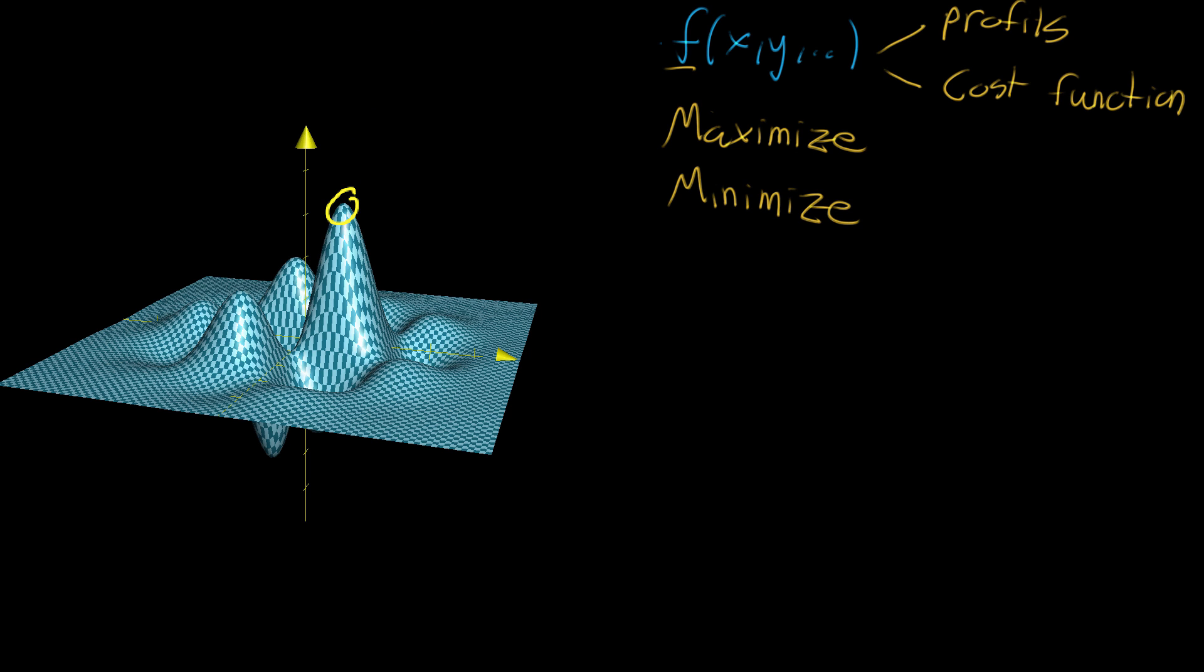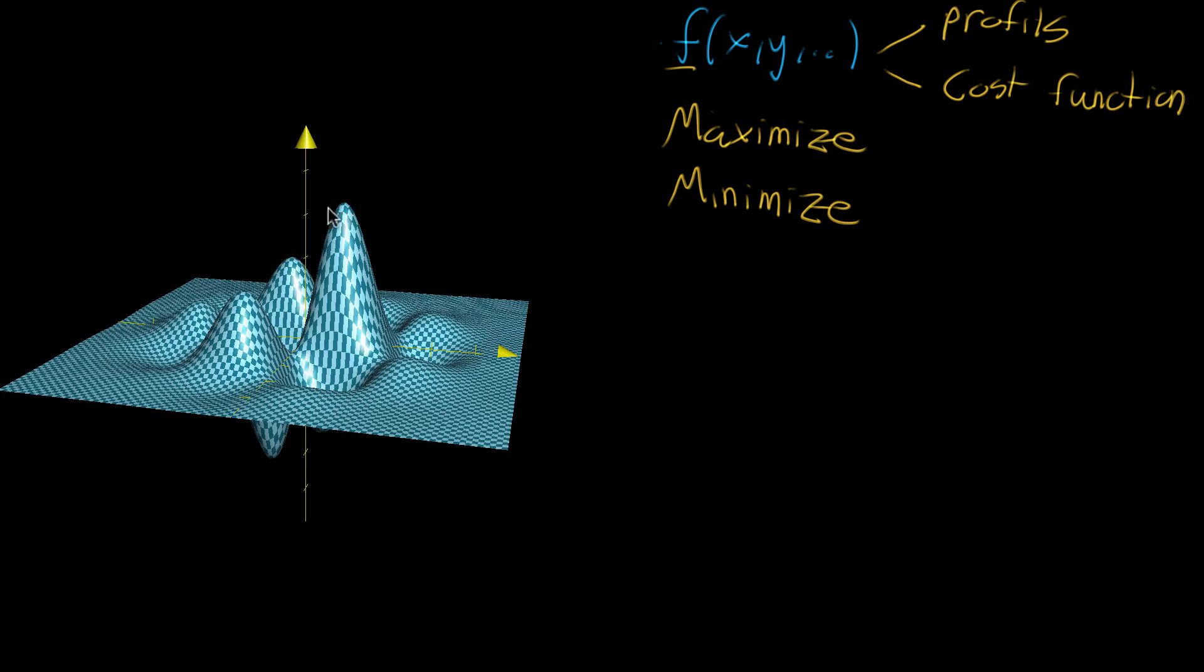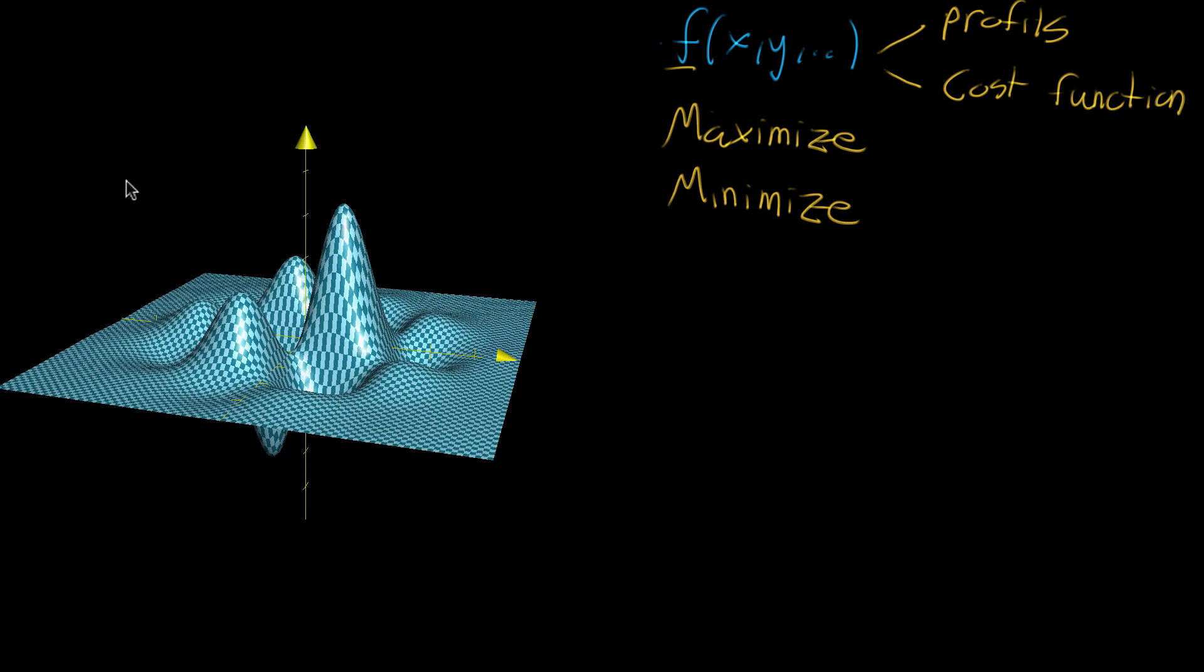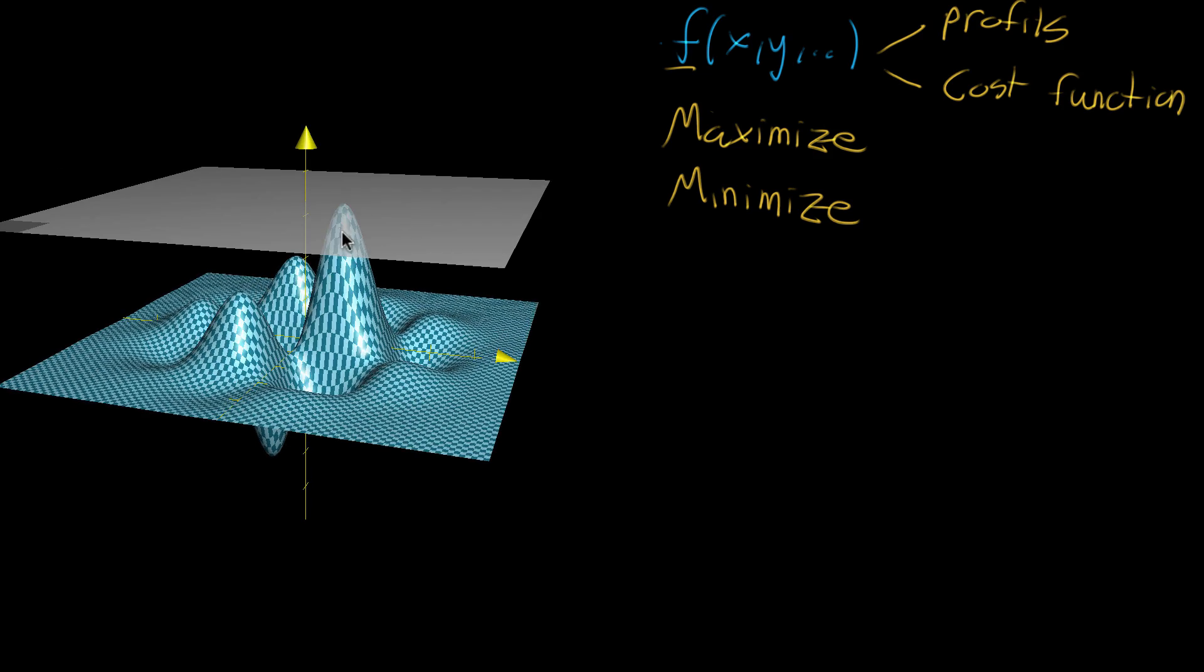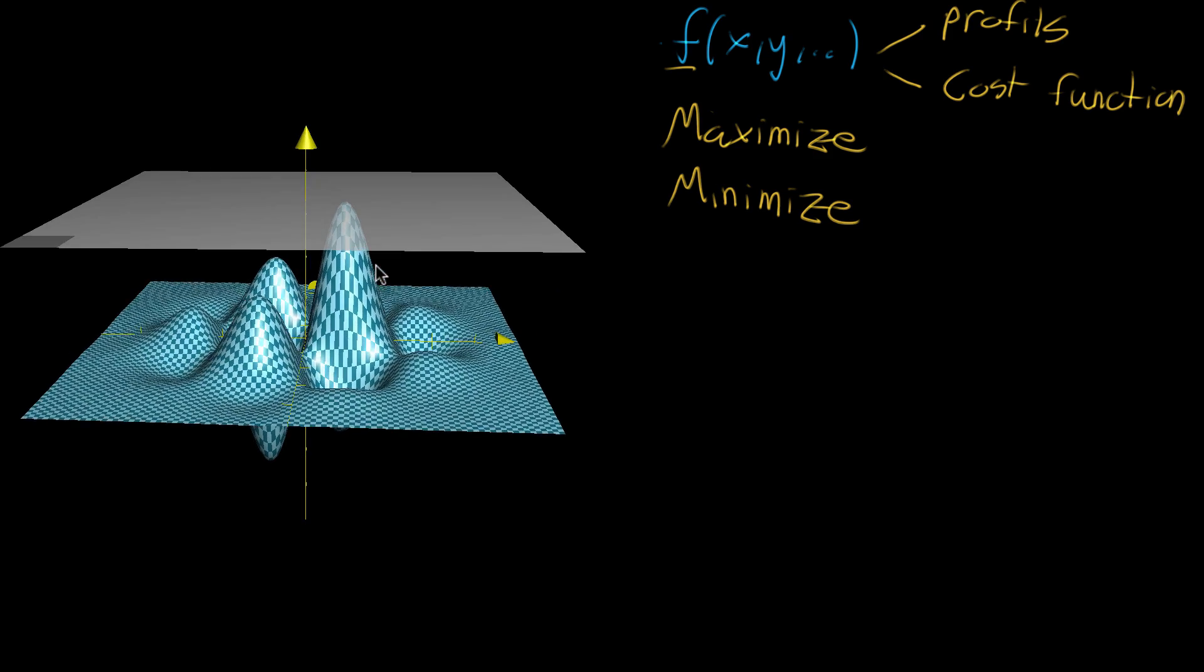This is perhaps the core observation in calculus, not just multivariable calculus. This is similar in the single-variable world, and there's similarities in other settings, but the core observation is that if you take a tangent plane at that peak, it's going to be completely flat.